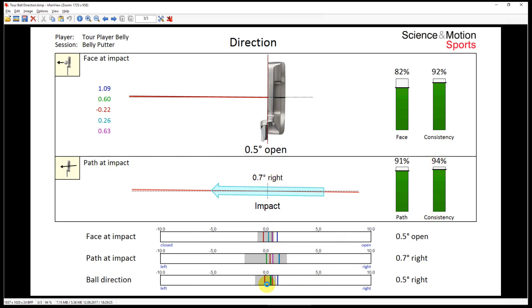So if we calculate the corresponding and resulting ball direction, then it will only be 0.5 degrees to the right. And if we look now at the gray range, you will see that four of the five putts would be starting inside of the hole width and one would be slightly outside of the hole on a 4 meter putt.